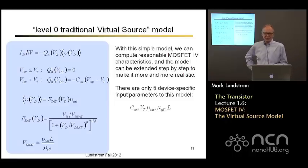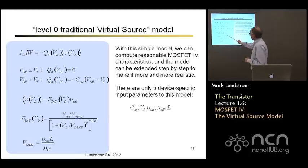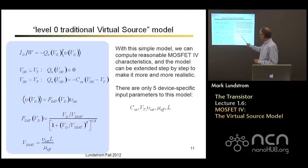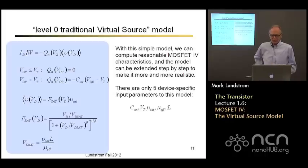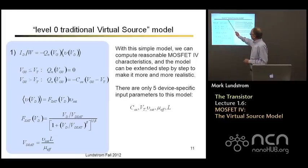I'm going to call this the level zero virtual source model — step by step we're going to make this more sophisticated. The level zero model writes the current as charge times velocity. We use a very simple expression for the charge ignoring charge below the threshold voltage. We use an empirical expression for the average velocity with an empirical parameter one over beta. There are only five parameters in this model, and these five parameters have very clear physical significance: gate oxide capacitance per square centimeter, threshold voltage, high field saturation velocity, effective mobility, and channel length. With those five parameters, you can do a very good job of fitting the IV characteristics of modern transistors if we allow Vsat and the effective mobility to be treated as semi-empirical. The five steps are: current, charge, average velocity, saturation function, and VDSat.